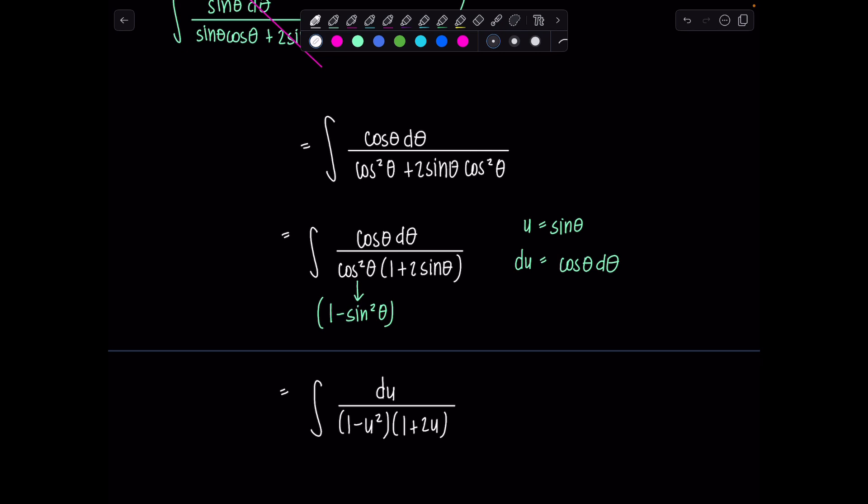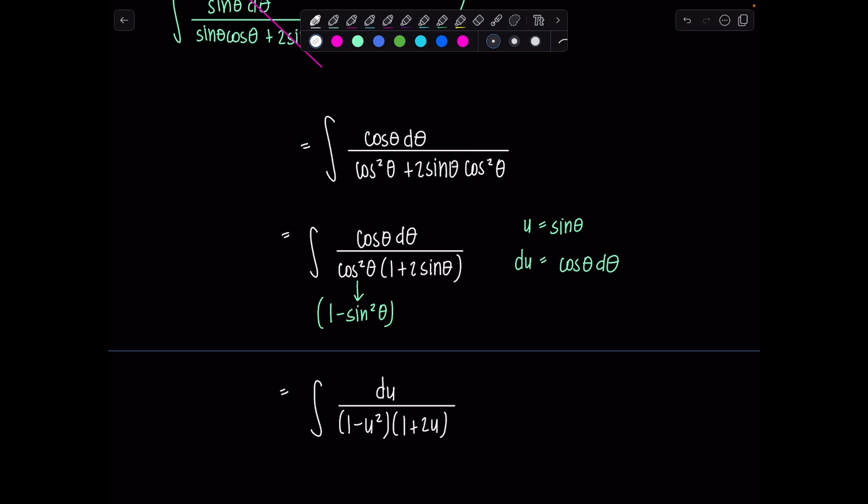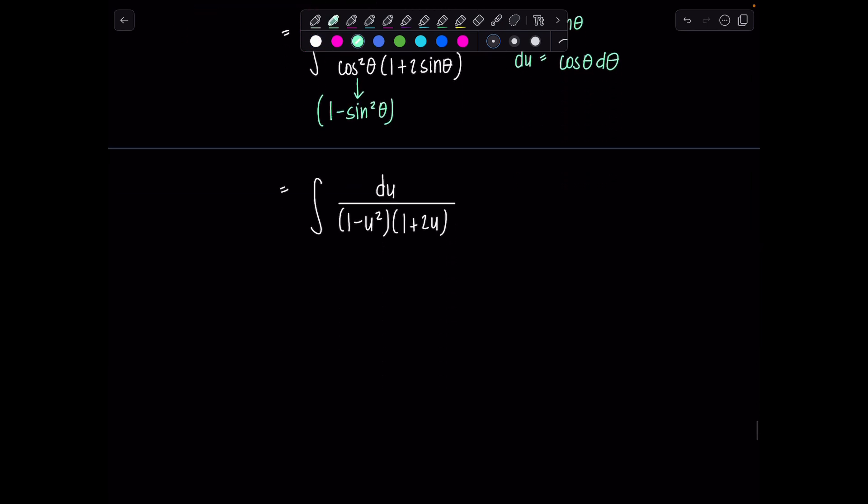So now we have a rational function. Let's go ahead, find its partial fraction decomposition. And then hopefully we can just finish off the problem from there. So partial fraction time. And then notice the denominator isn't completely factored. 1 minus u squared. I can break that down into 1 plus u and 1 minus u. So let's do that. There we go. 1 minus u. 1 plus u. And then we have 1 plus 2u.